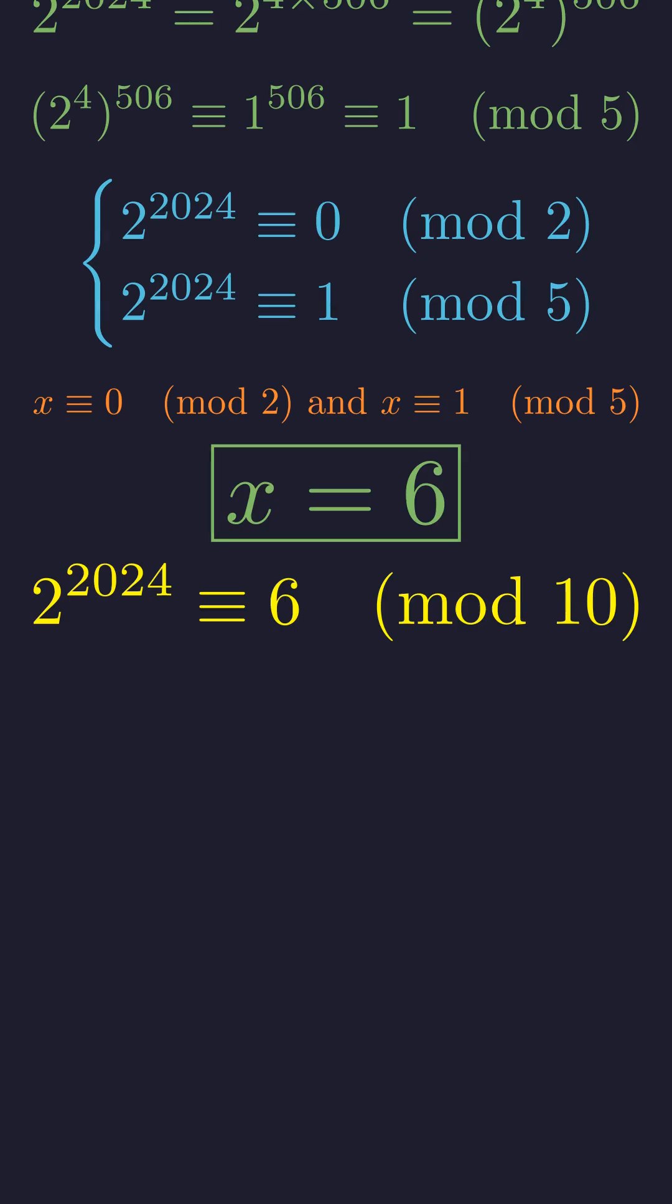And there we have it. The last digit of this massive number is 6. What started as an intractable computation became a simple exercise in modular arithmetic, all thanks to a theorem discovered over three centuries ago.